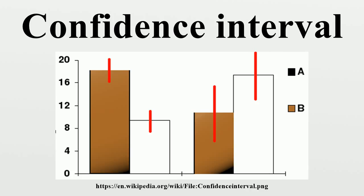For the same reason, the confidence level is not the same as the complementary probability of the level of significance. Confidence regions generalize the confidence interval concept to deal with multiple quantities. Such regions can indicate not only the extent of likely sampling errors, but can also reveal whether, if the estimate for one quantity is unreliable, the other is also likely to be unreliable. A confidence band is used in statistical analysis to represent the uncertainty in an estimate of a curve or function based on limited or noisy data.